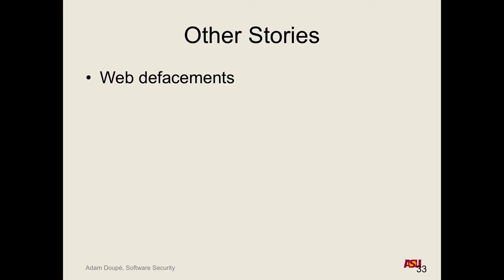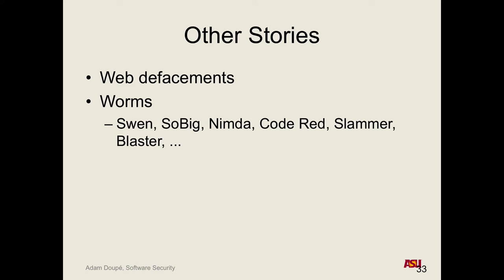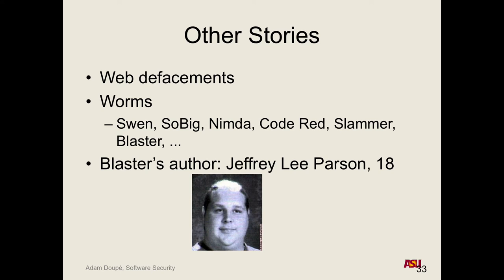Web defacements have kind of gone down over the years. It used to be a big thing to prove you were cool in the hacking community by defacing a website and putting up a page that said 'We are the hackers.' In the early 2000s, there was a wave of worms — Nimda, Code Red, Slammer, Blaster — that spread incredibly fast by taking advantage of vulnerabilities in Windows systems. Since every computer on the internet was running Windows, they exploited vast numbers of machines in a small amount of time. Blaster's author was 18 years old, which kind of goes to show that almost anyone can do this.